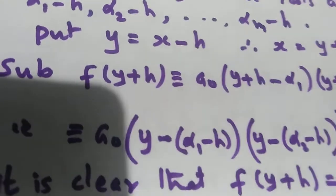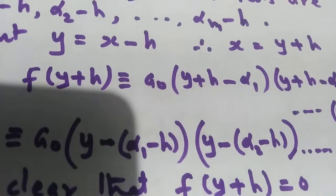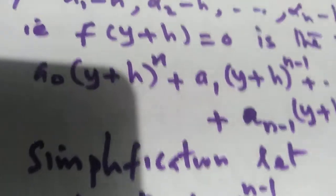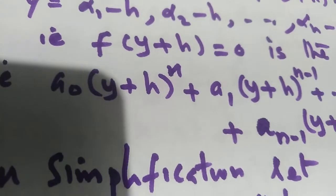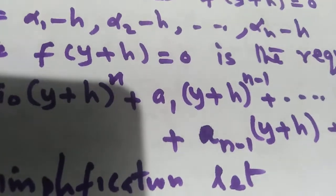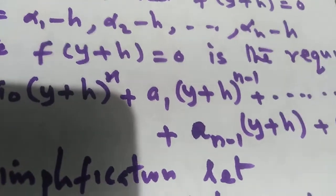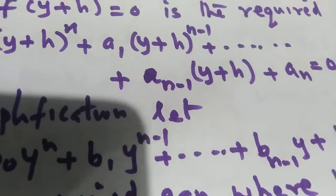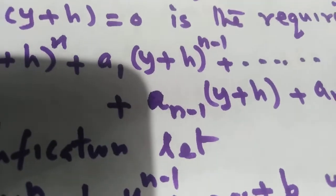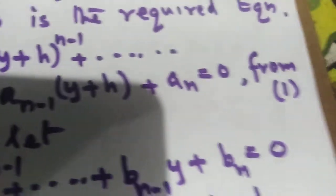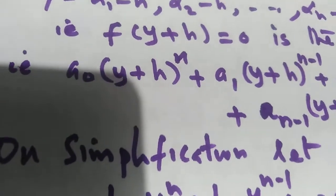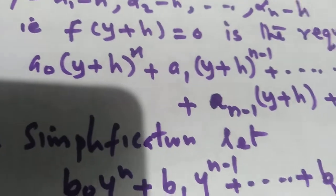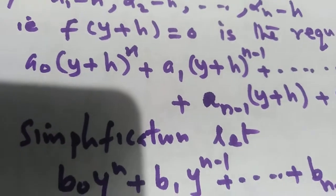That is, f(x) becomes f(y + h), equal to a0 times (y + h) raised to n, plus a1 times (y + h) raised to n minus 1, plus etc., plus a(n-1) times (y + h), plus an equal to 0. Now we have to expand (y + h) raised to n, (y + h) raised to n minus 1, etc., using binomial expansion.